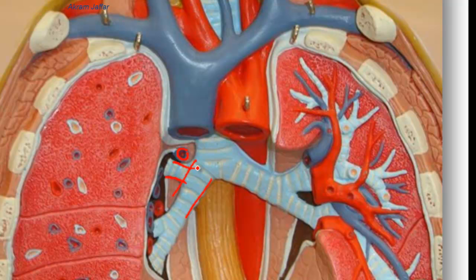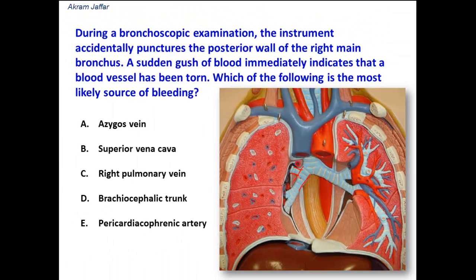The arch of the azygous vein heads anteriorly and opens into the superior vena cava, which continues into the right atrium. Before reaching the right atrium, it receives the arch of the azygous vein. As you can see, the arch of the azygous vein is so closely related to the right main bronchus as it arches over the right main bronchus from behind forwards. It would be the vessel most likely affected when the right main bronchus is penetrated.